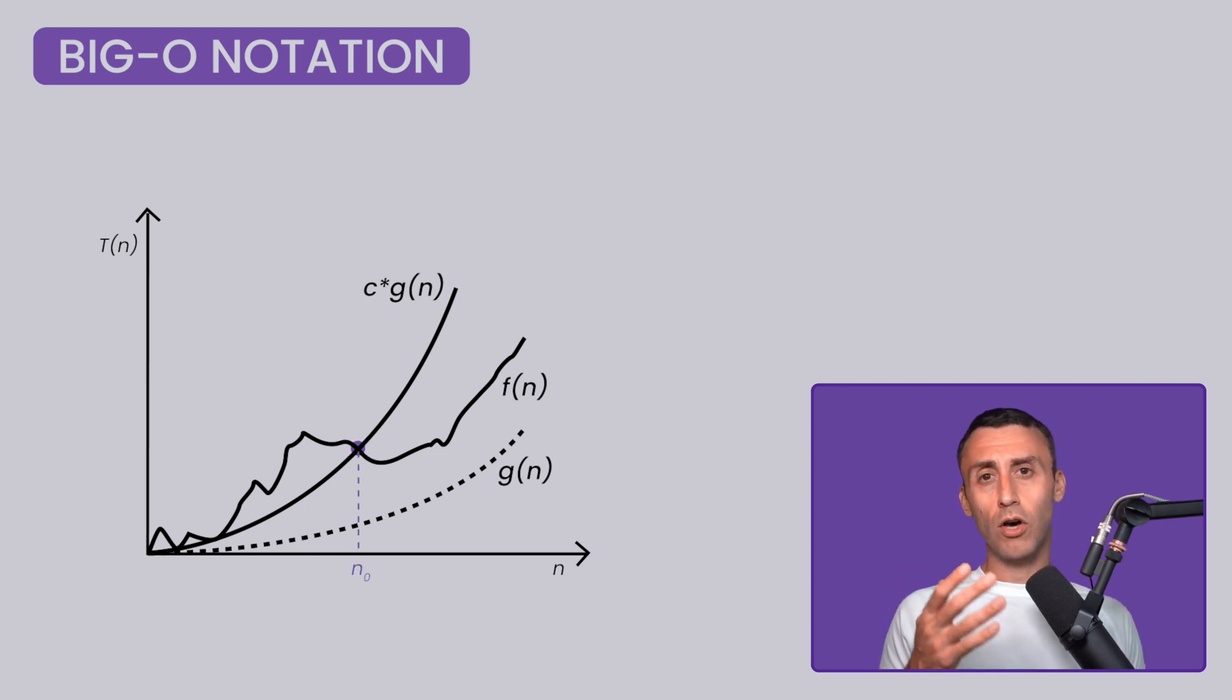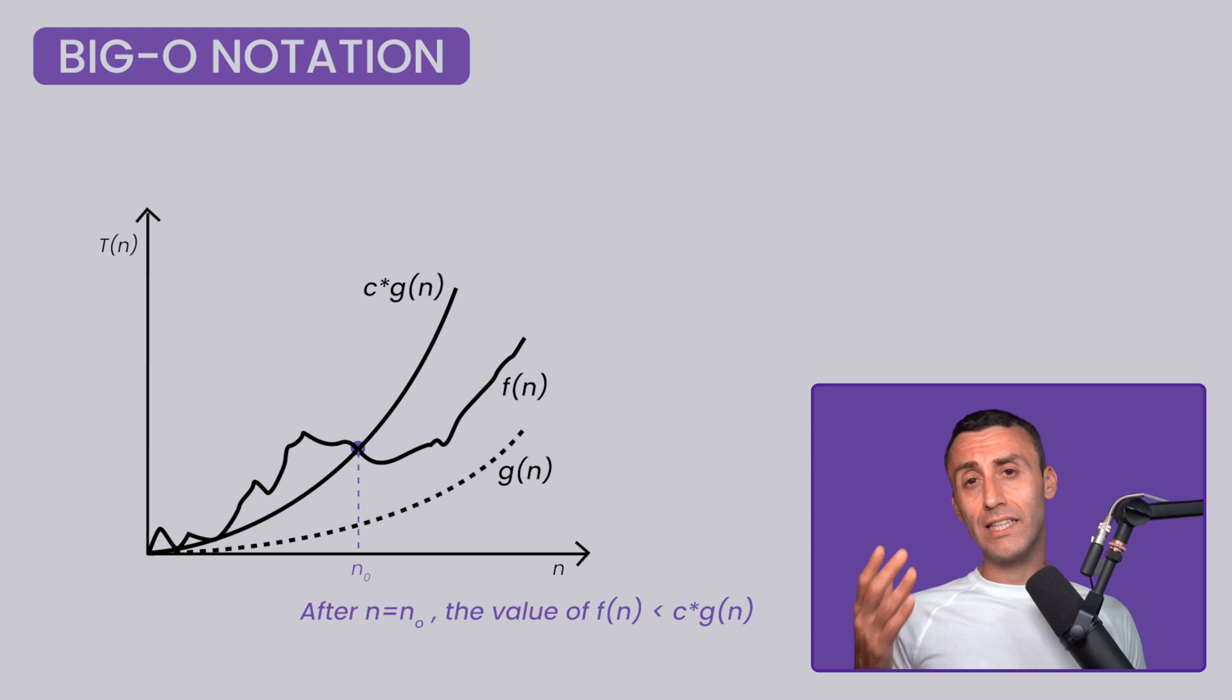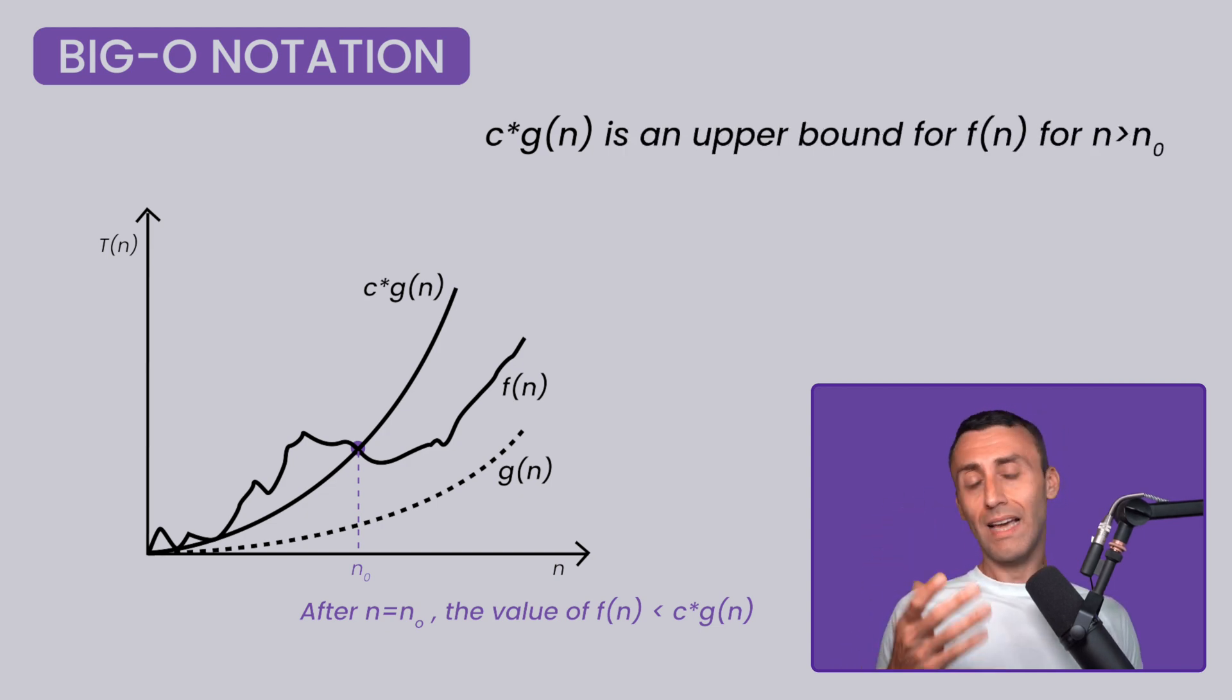Suppose at this point of intersection the value of n equal n0. Now, as you can see, after point n0, the value of f is always less than the value of c multiplied g. Or we can alternatively say f will remain lesser than c multiplied g. And boom, we found what we were looking for. We can safely say here that c multiplied g is an upper bound for f when the argument, n here, is greater than a constant value n0.